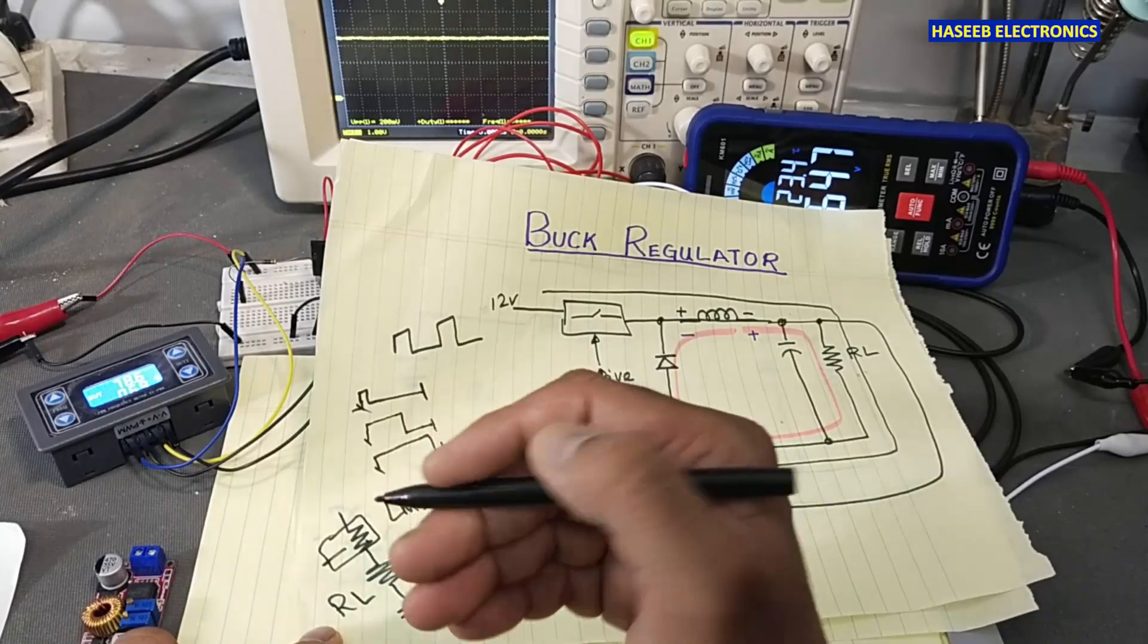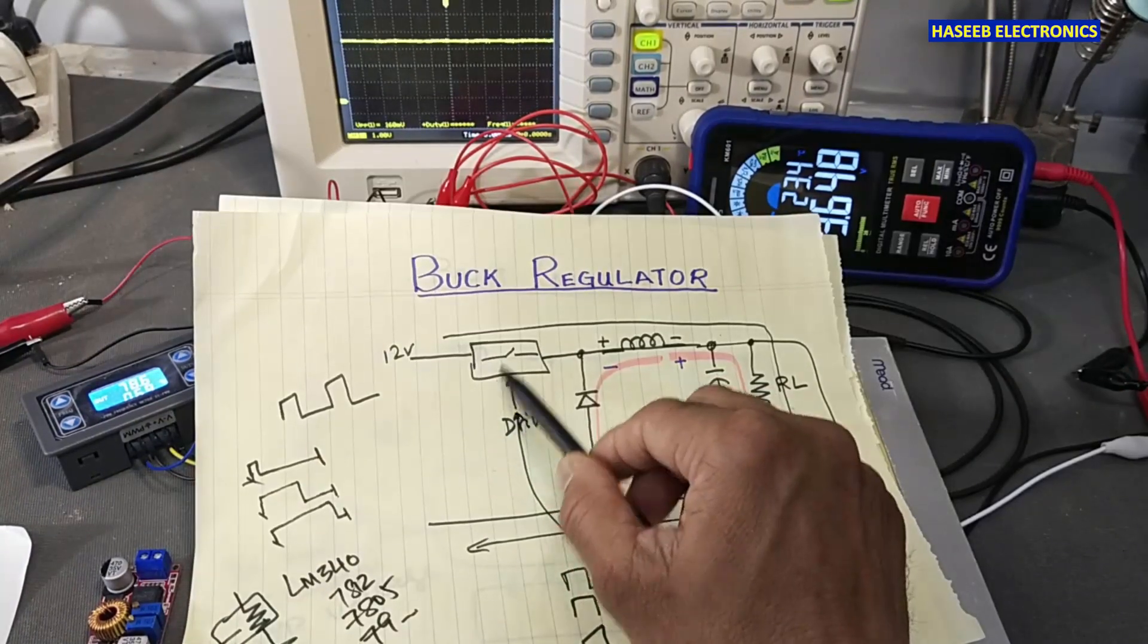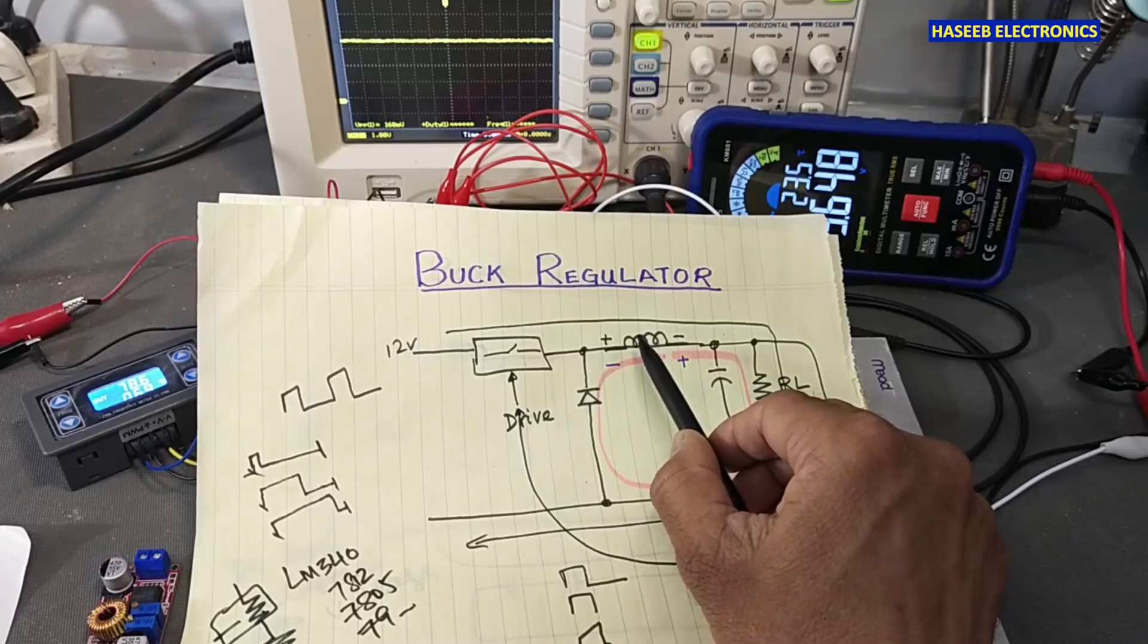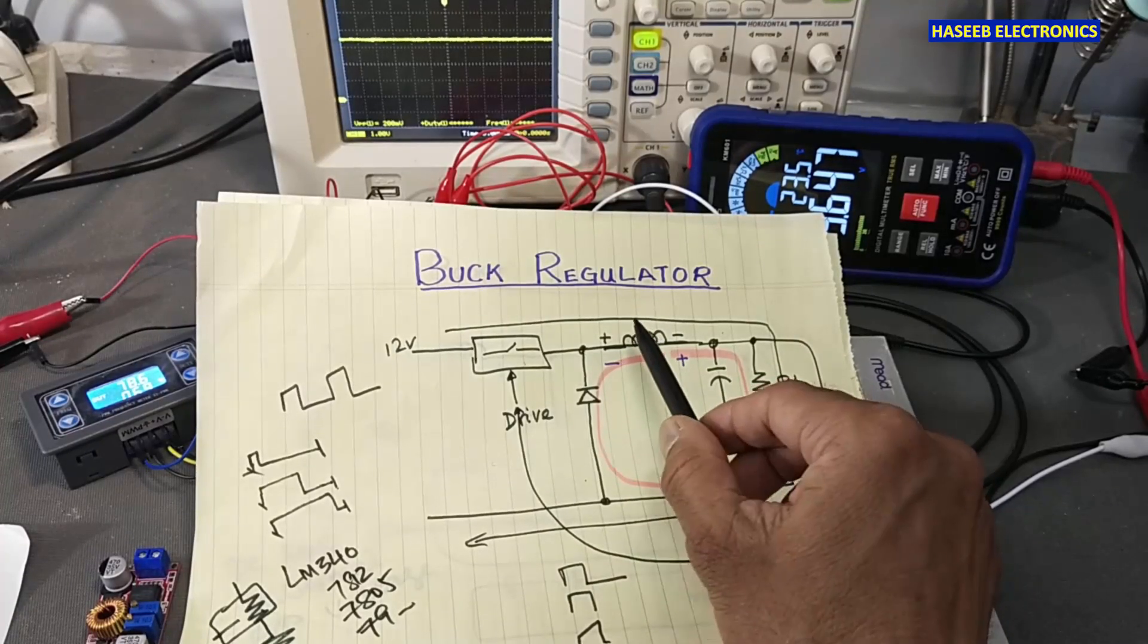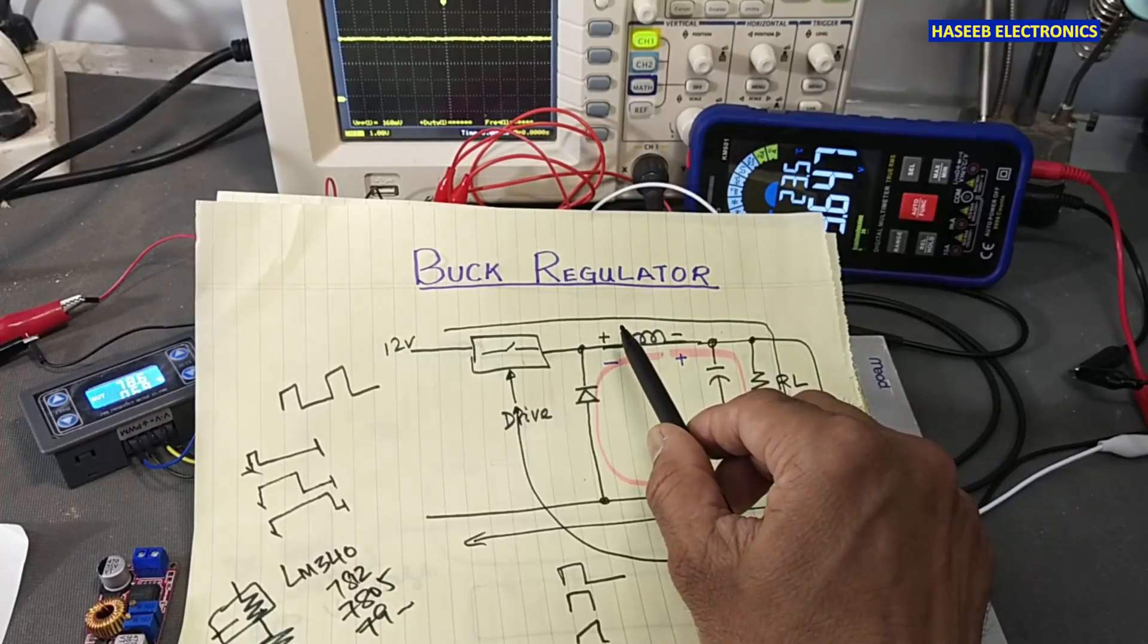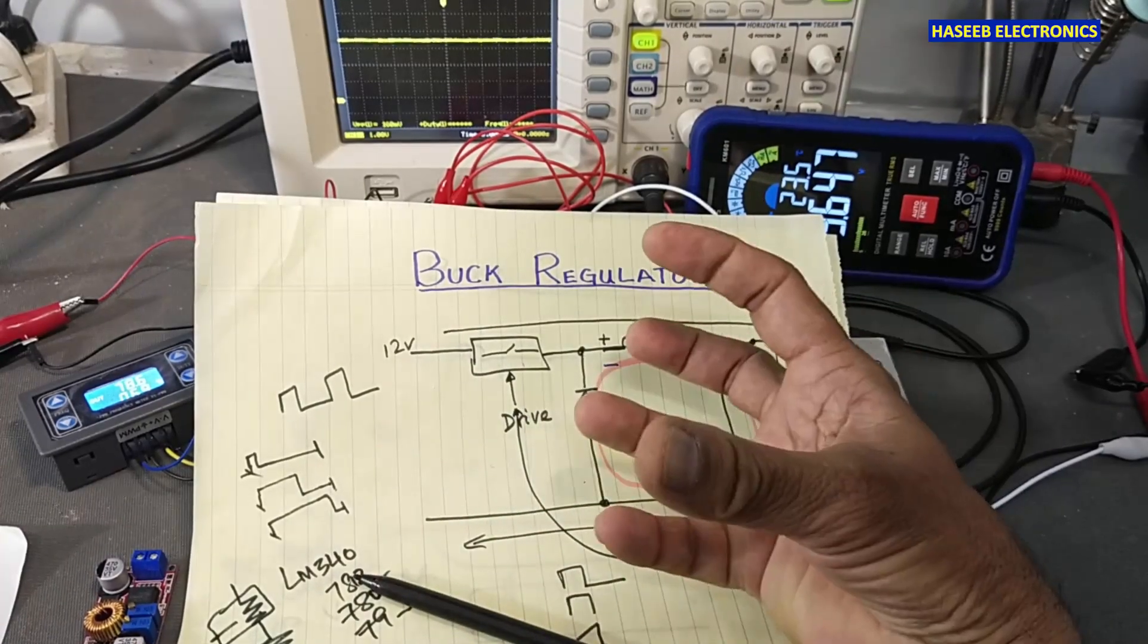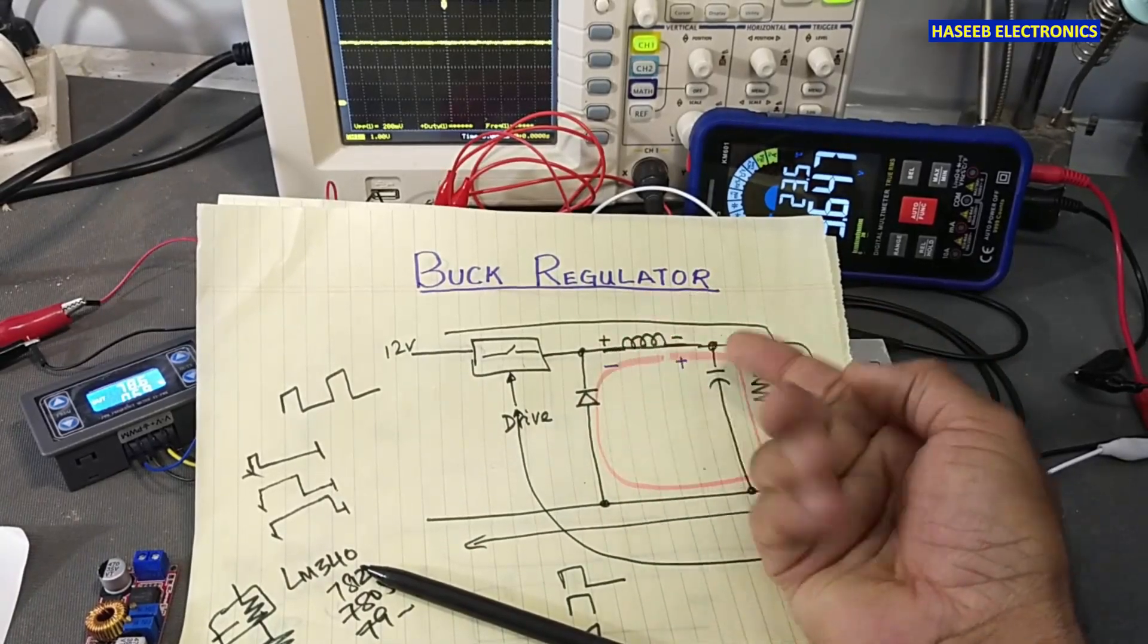It will dissipate the power all the time in form of heat. That heat is power loss. But here when it is switching, current will reach and this inductor will resist current flow, but it will not resist in form of heat dissipation. It will resist to store the energy in form of magnetic field. When this switch opens, this magnetic field will collapse.